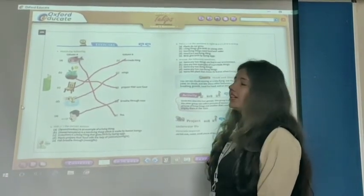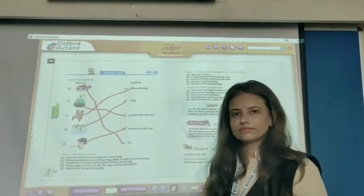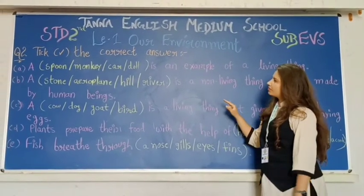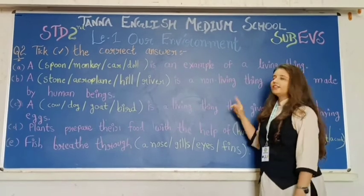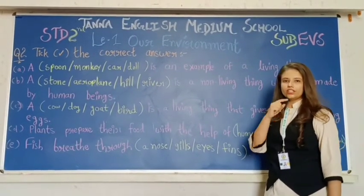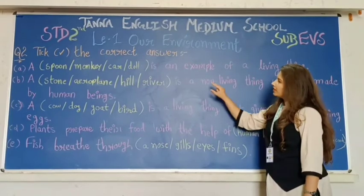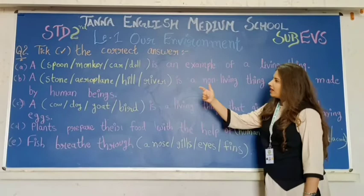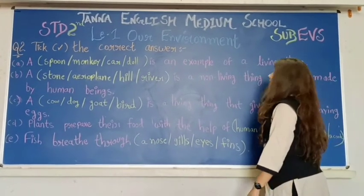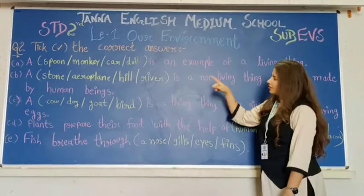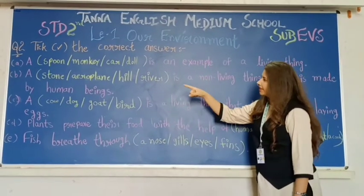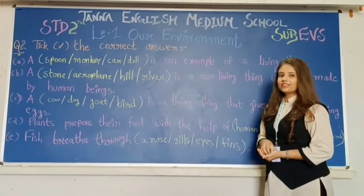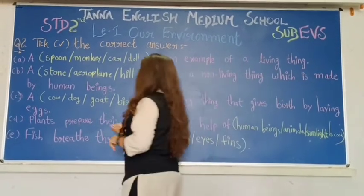Here we have completed our match the following. So students, let's continue. Our next question is question number two, that is page number 167 in your book. Write the correct answer. First question is: a dash is an example of a living thing. Your options are spoon, monkey, car, door. What is your correct answer? Monkey is your correct answer. We will write monkey.